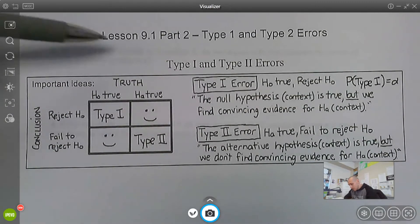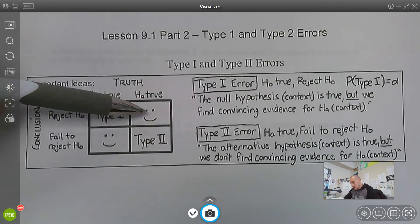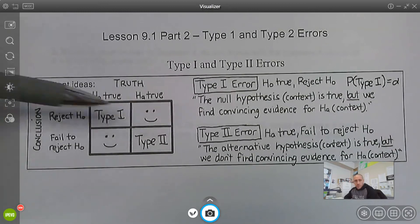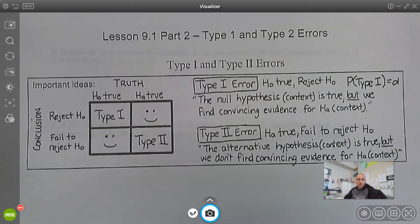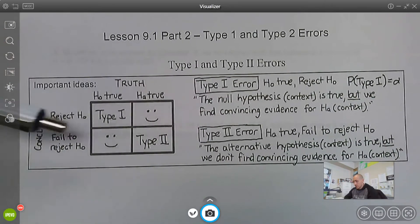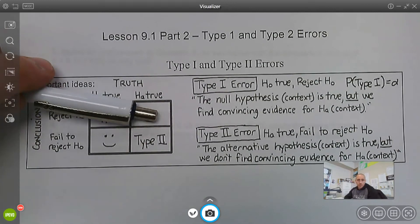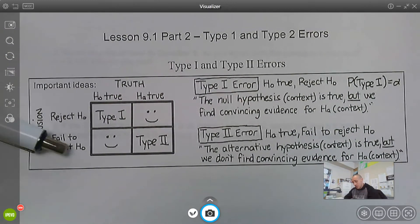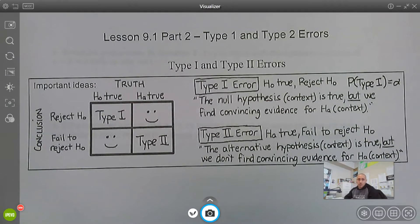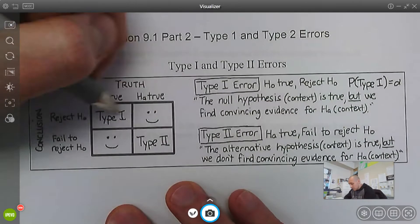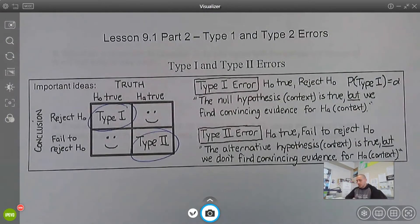I like this little table here. It's just a nice reminder of two of these four scenarios represent a good thing. We make the right decision. The alternative is true and we reject the null. Hey, that's good. The null is true and we fail to reject it. That's good. But here are the Type 1 and Type 2 errors that we have been speaking about.